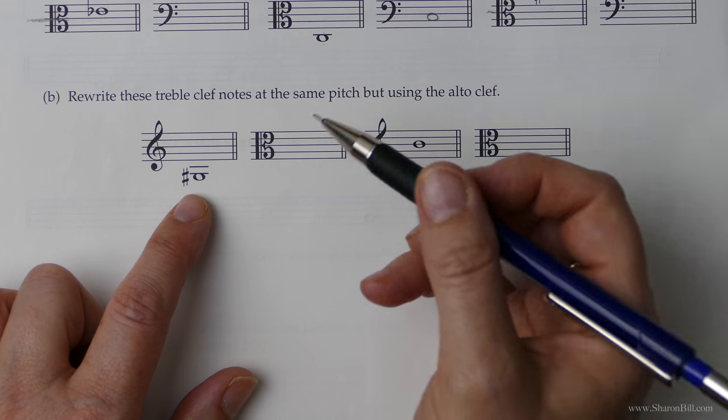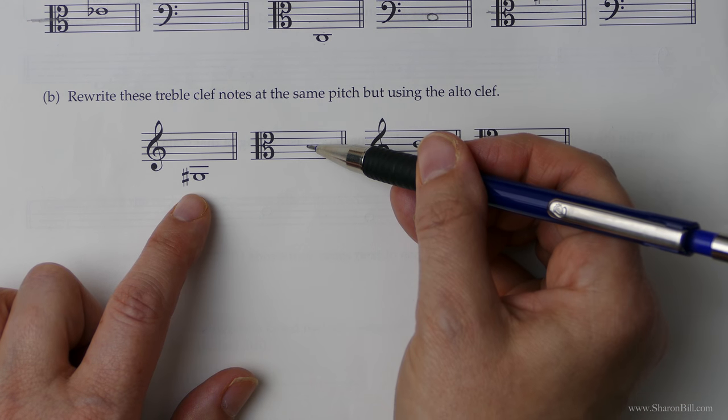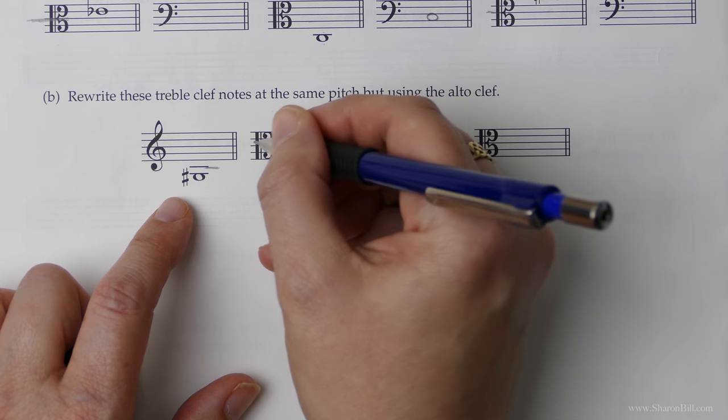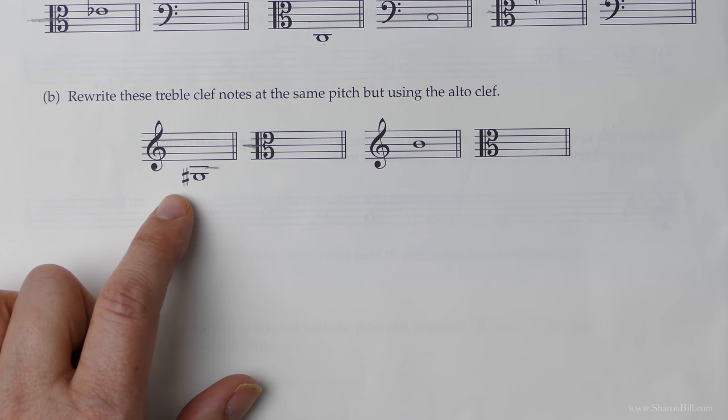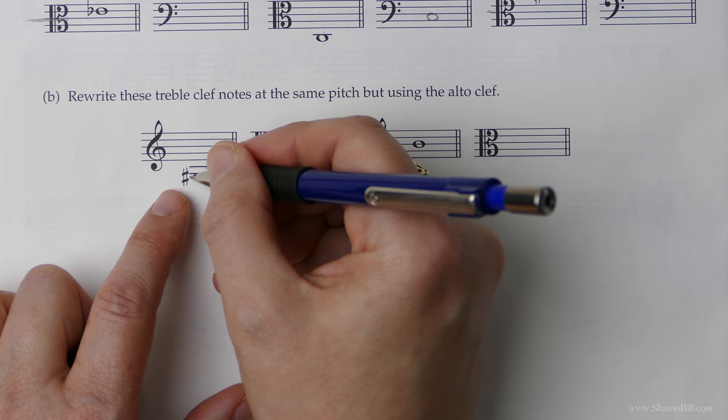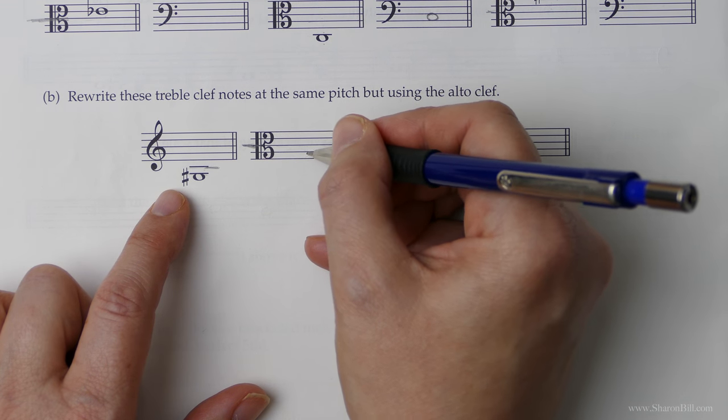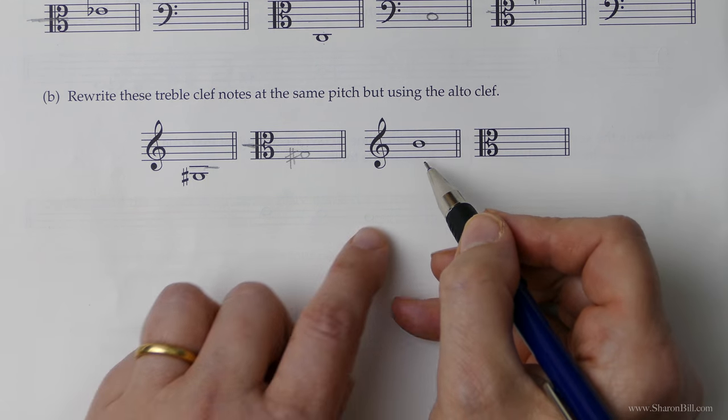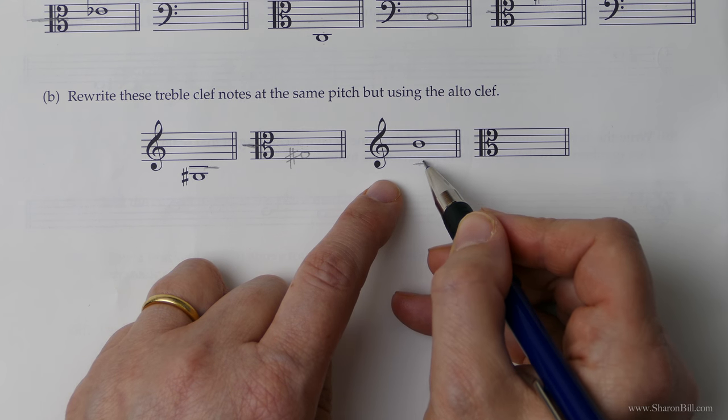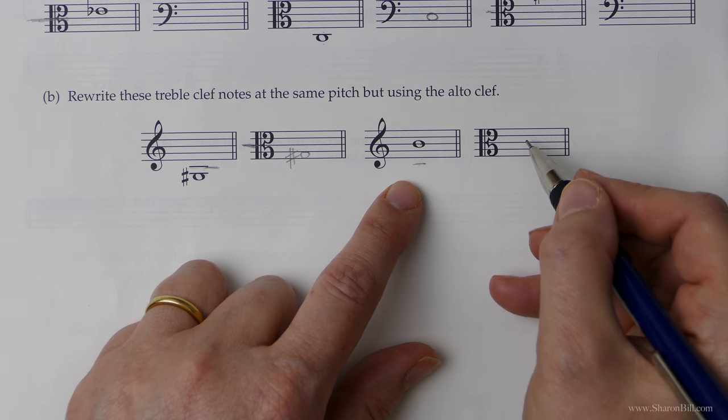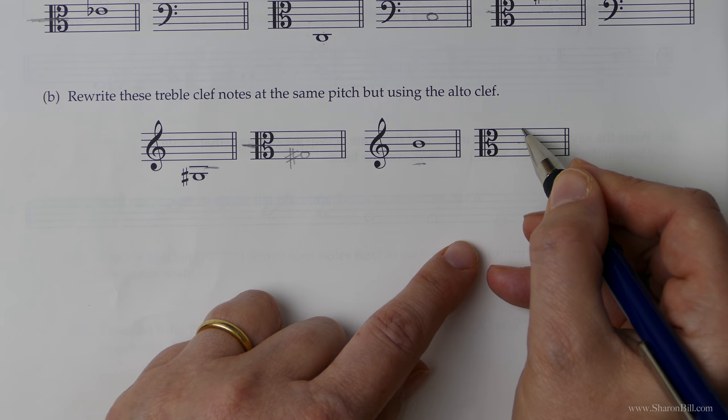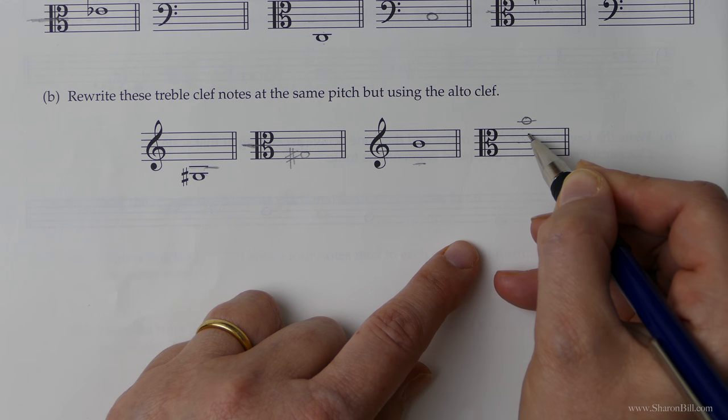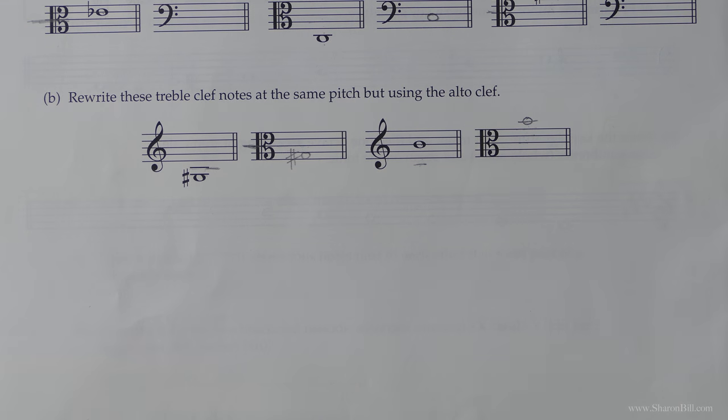Now we're going the other way. We're going from treble clef to alto clef. Same principle though. Just keep your eye on where middle C is. This is middle C in the treble clef. This is middle C in the alto clef and just work it out from there. C, B, A, G sharp. C, B, A, G sharp. So here this is the B, one, three, five, seven notes above middle C. So one, three, five, seven. C, D, E, F, G, A, B. There we go.